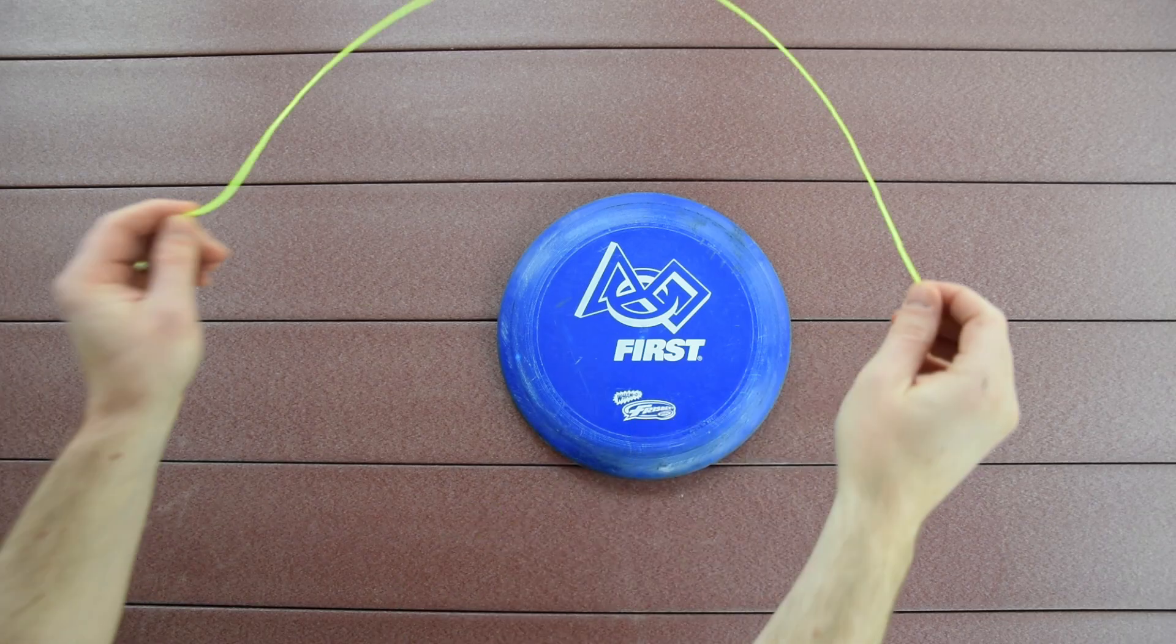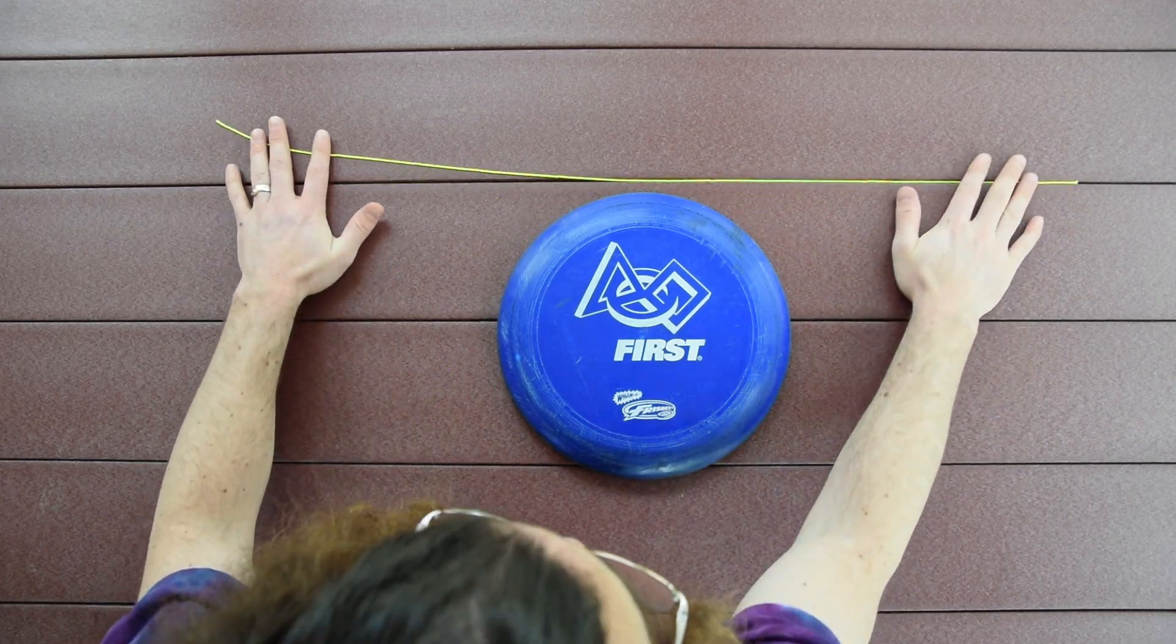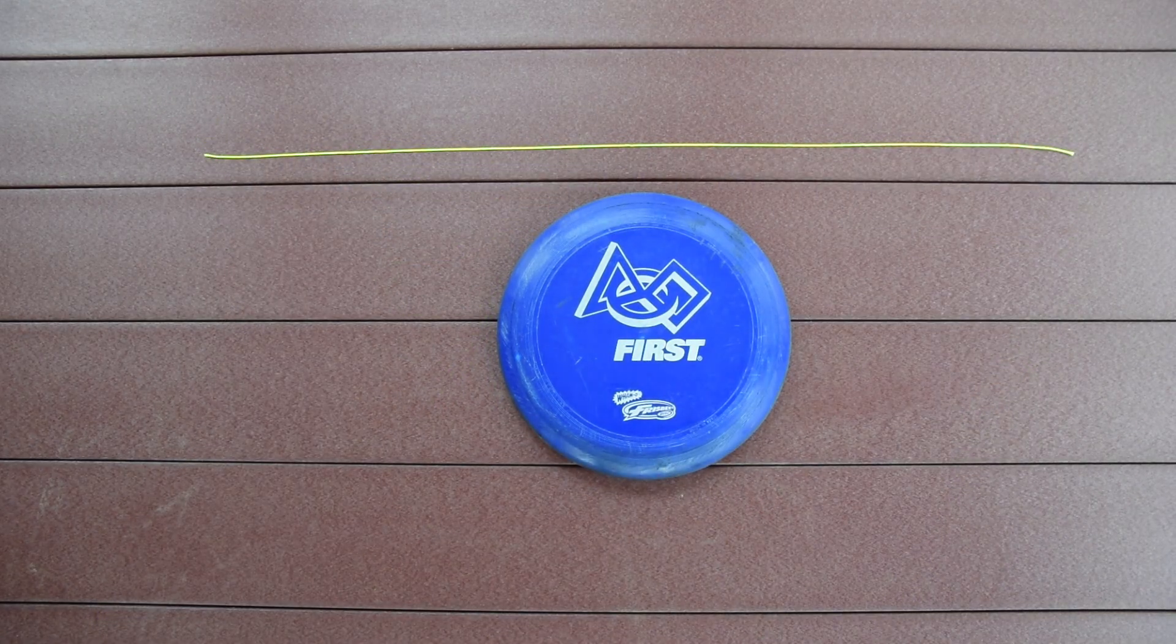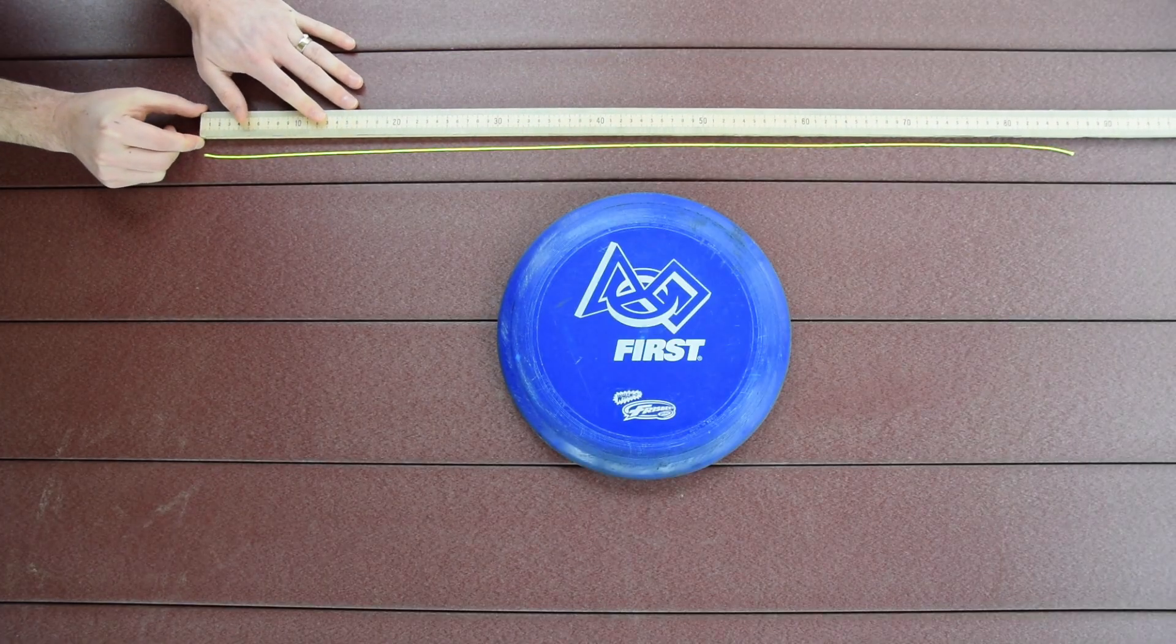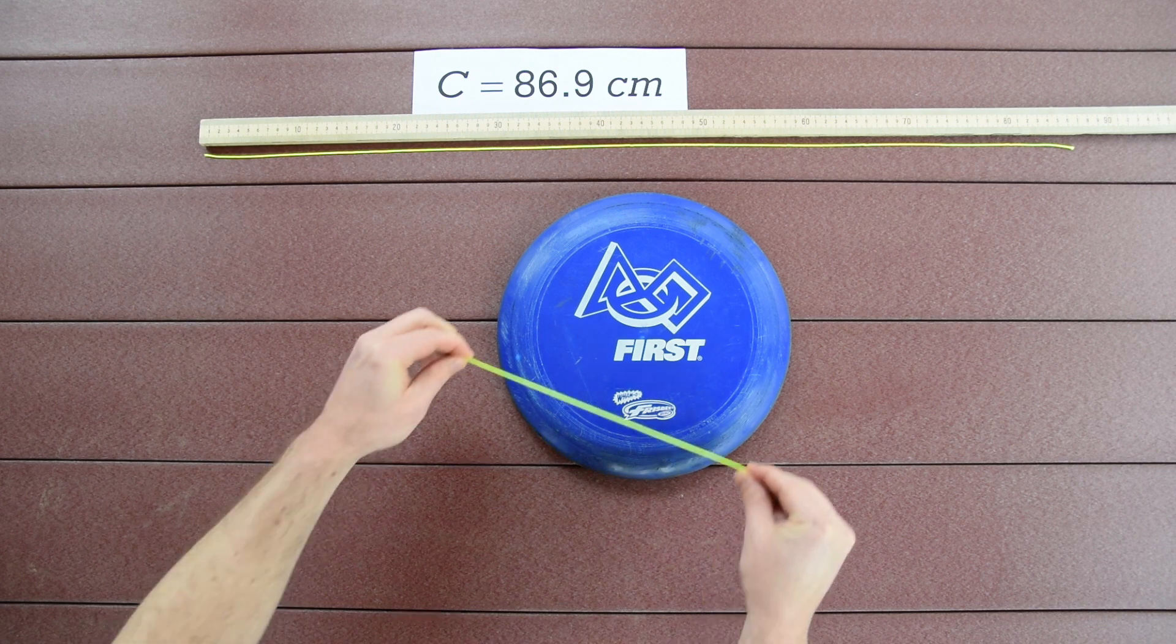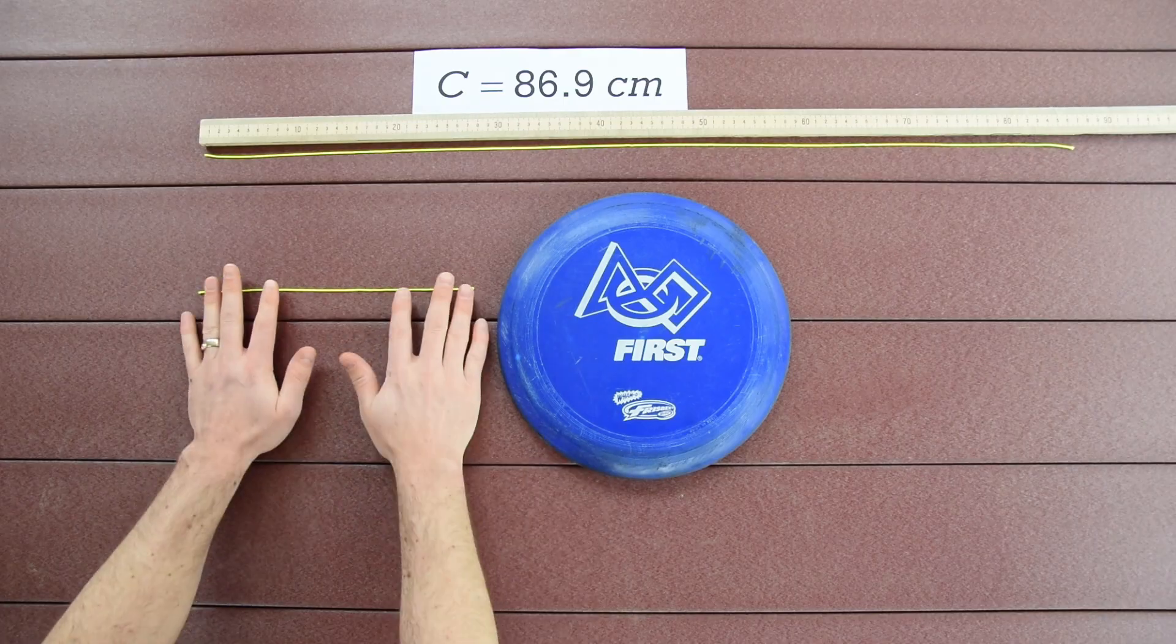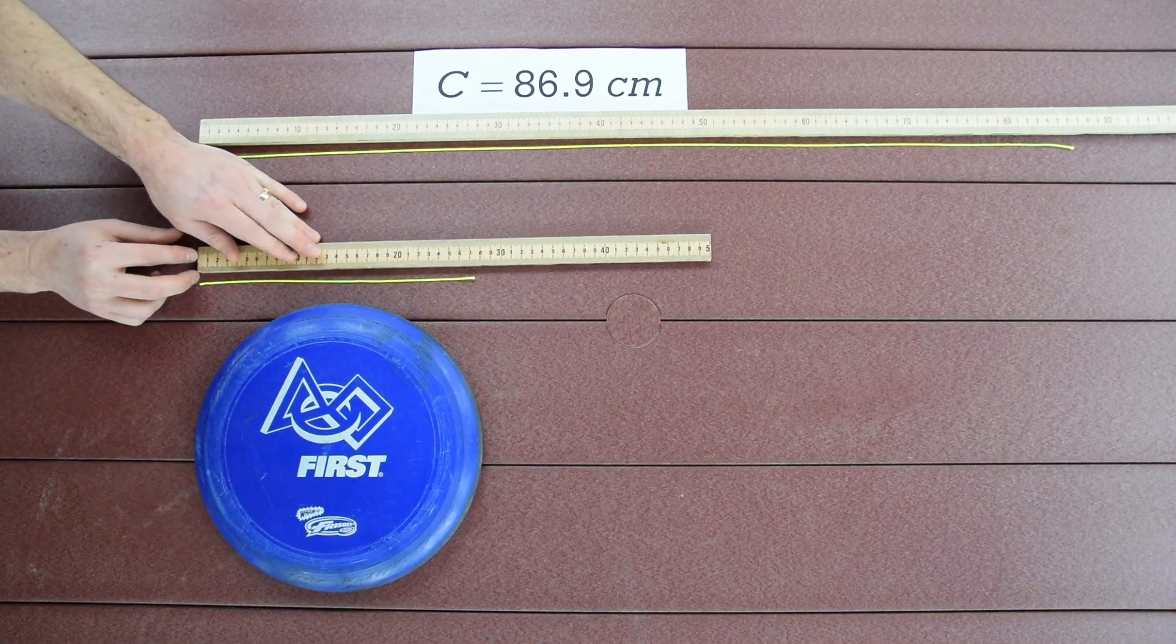Now we can wrap a string around the outside of this circular frisbee, and I have pre-cut the string such that the length of the string equals the circumference of the frisbee, which I measure to be 86.9 centimeters. Then we can lay a string across the middle of the frisbee, and I have pre-cut that string such that its length matches the diameter of the frisbee,